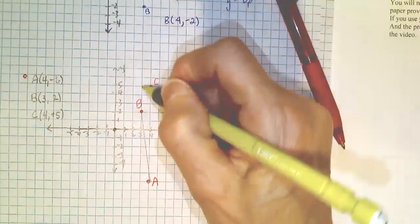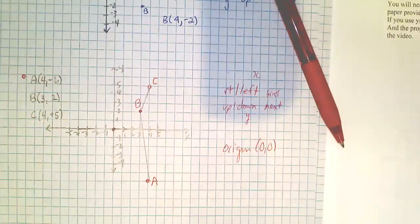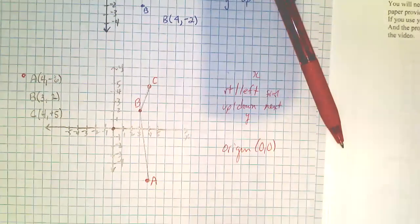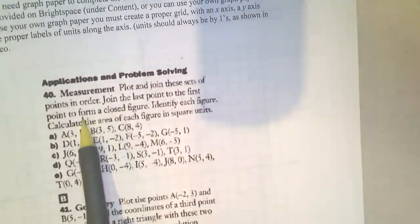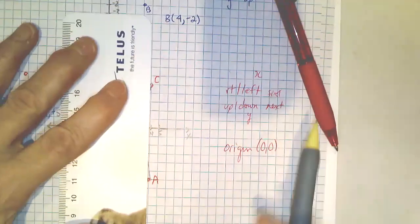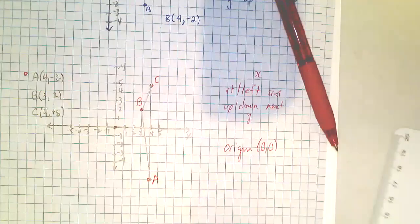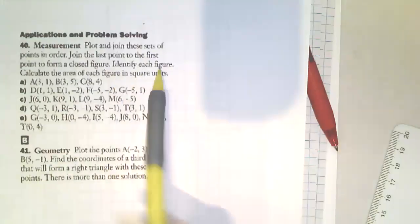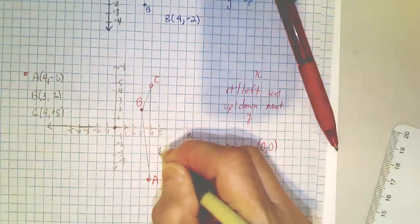And so the instructions tell me to connect B to C because you connect the points in order. Then join the last point to the first point, as it says here, to form a closed figure. And so if I connect, okay, and then I get a shape. And the question says identify the shape. So I write a triangle.